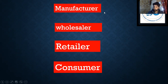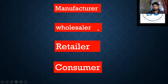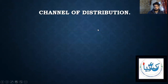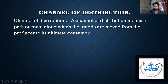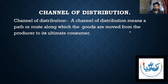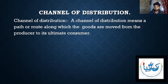This is what you call the channel of distribution — how goods move from manufacturer to consumers. These are what you call paths. A channel of distribution means a path or a route along which the goods are moved from the producer to its ultimate consumer. Channel of distribution is a path or a route along which the goods go from the producer to the consumer.